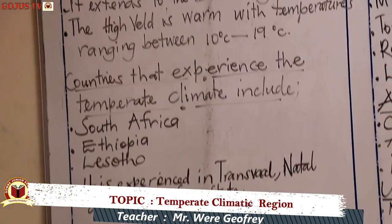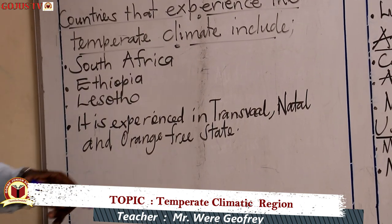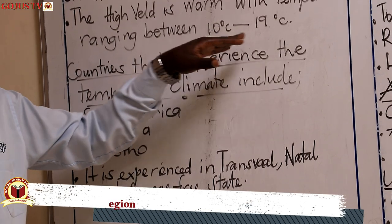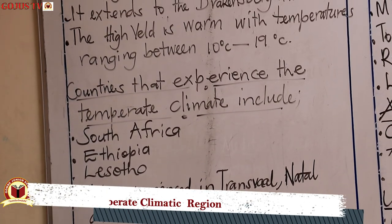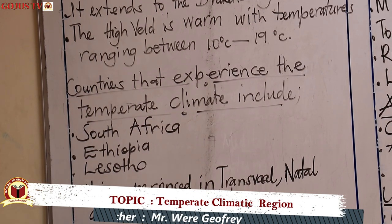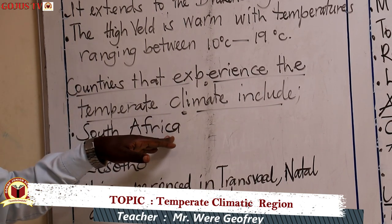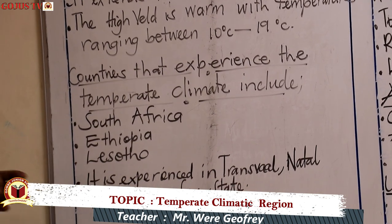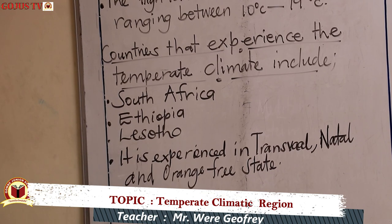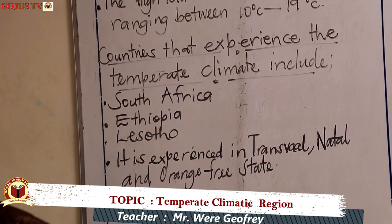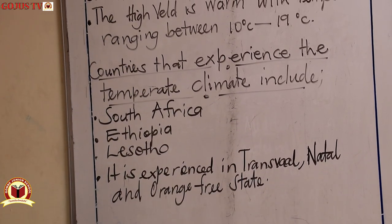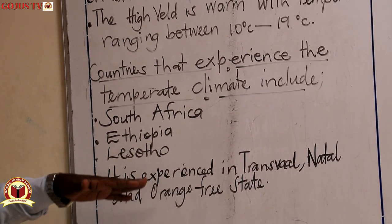The High Veld is warm, with temperatures ranging between 10 to 19 degrees Celsius. What are the countries that experience this type of climate? South Africa has the largest area. We also have Ethiopia and Lesotho. Now in South Africa, it is experienced in Transvaal, Natal, and Orange Free State.